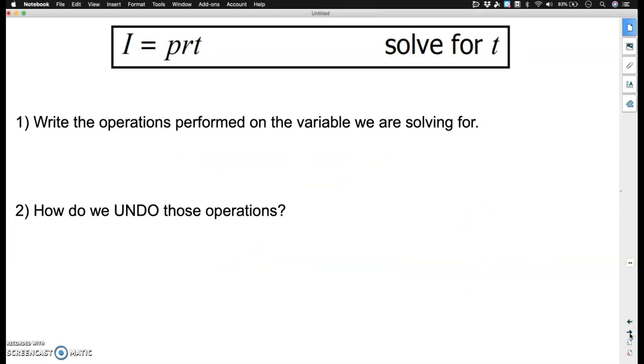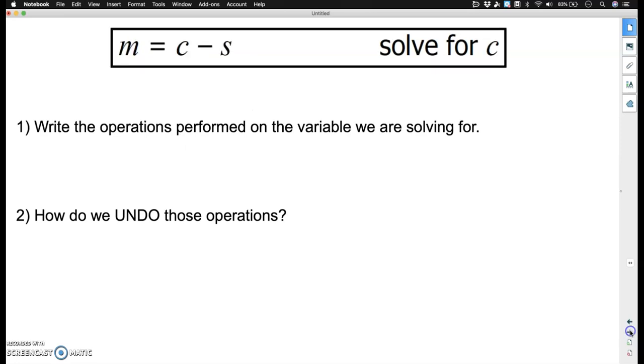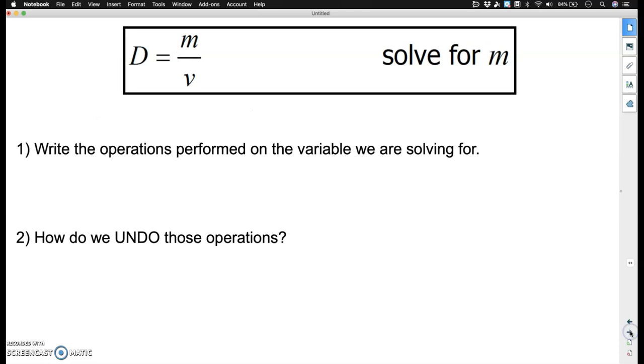These next problems are on your own. I would like you to answer these two questions for each one of these problems. So i equals prt and you are solving for t. a equals pi r squared and you are solving for r. m equals c minus s. d equals m divided by v.